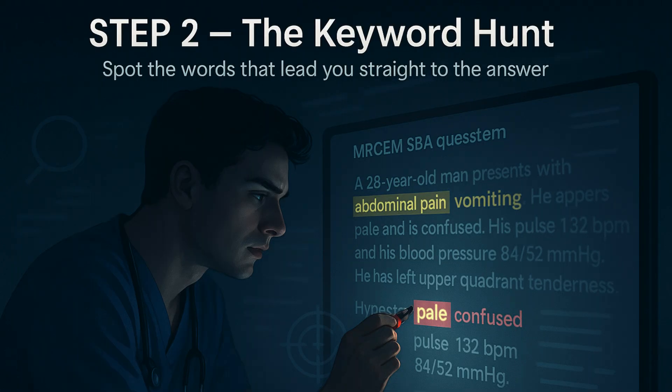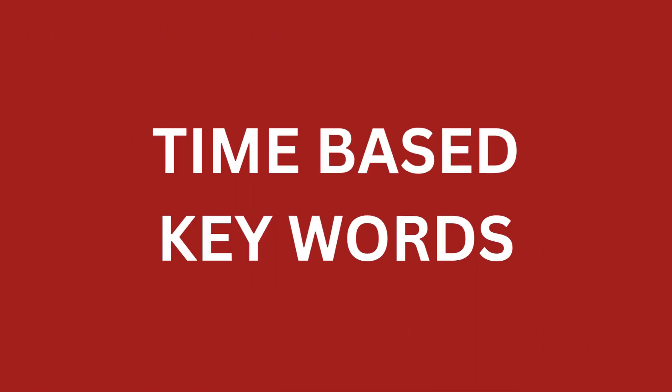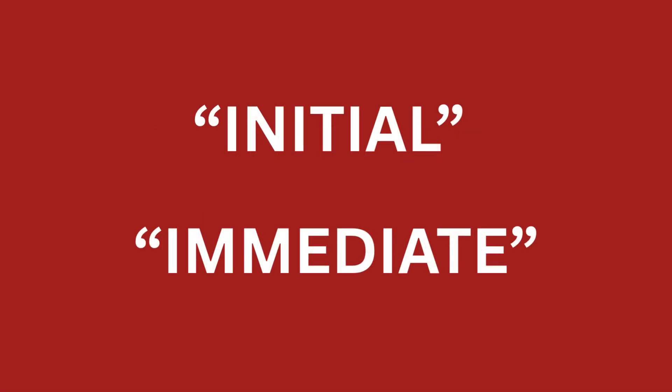Step 2: The Keyword Hunt. Once you know the question, you need to hunt for the keywords. Examiners use these precise words to guide you to the correct answer. Let's break down the most common ones. First, time-based keywords — these are crucial. 'Initial' or 'Immediate' means what is the very first thing you must do right now? It's often a life-saving intervention or a bedside test.